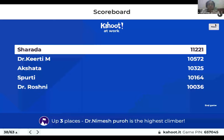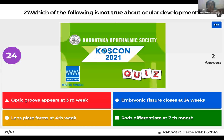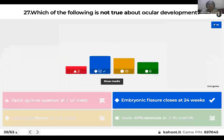Question 27: Which is not true about ocular development? Optic groove appears at third week; embryonic fissure closes at 24 weeks; lens plate forms at the fourth week; or rods differentiate at the seventh month? The right answer is that the embryonic fissure closes at around six weeks (one and a half months), not 24 weeks. The rest of the answers are correct.